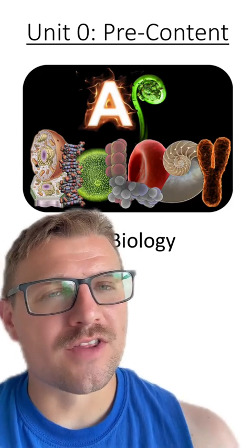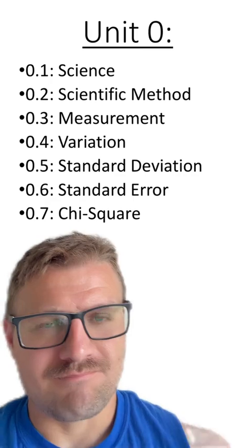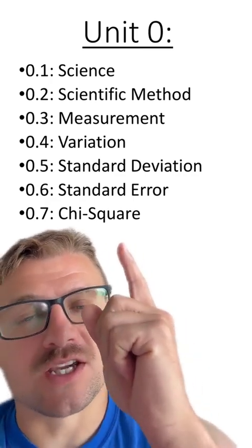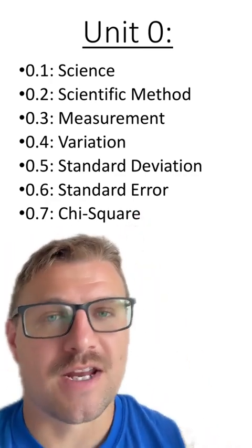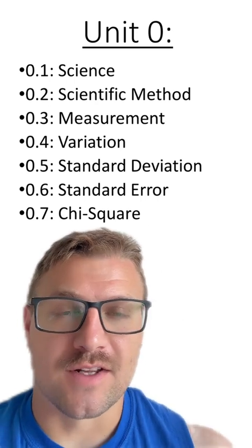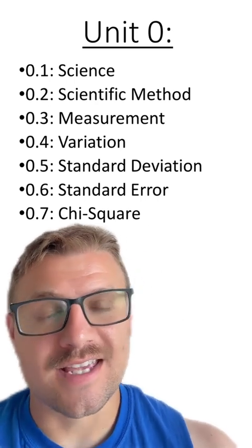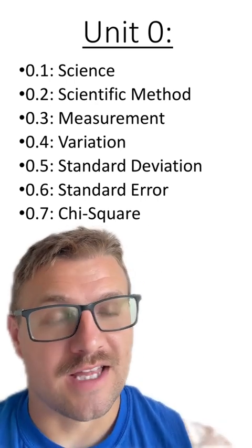Hello AP Biology students, we're going to cover the last section in unit 0. In this section, we're going to cover something called the chi-square equation. This is going to round out unit 0 and specifically our content about statistics and the math that we're going to be using in this class.